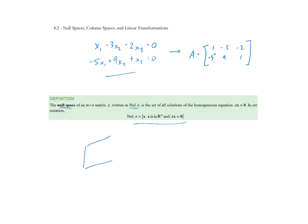Visually, what we're looking at for the null space of a matrix: if this is R^m over here and R^n over there, the null space of A is the set of vectors — the zero vector is in the null space (the trivial solution) — but it's all the vectors that map onto the zero vector. That guy maps to the zero vector, that guy maps to the zero vector, and so on. That's the visual representation of what the null space looks like.